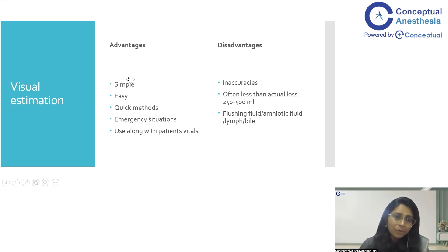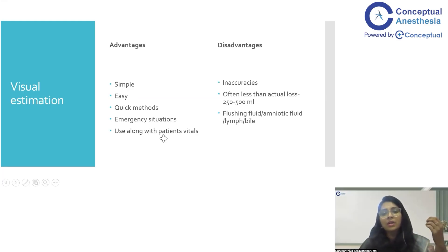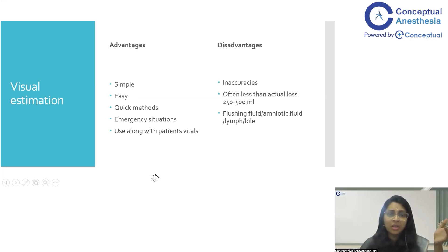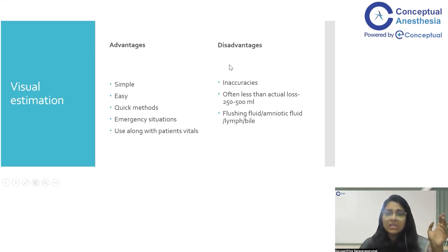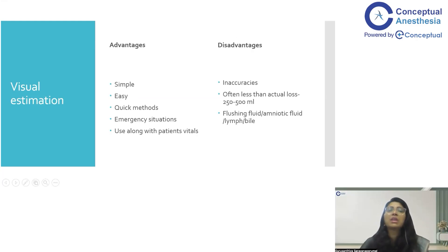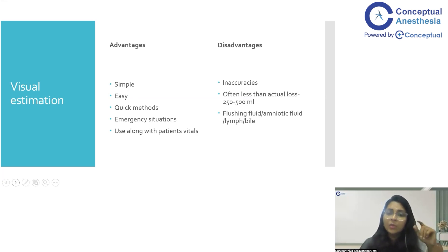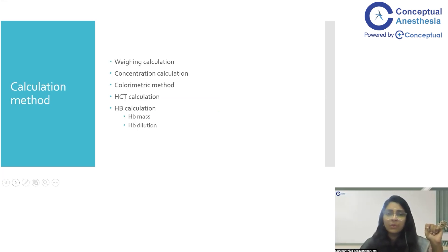In emergency situations, you have to titrate this estimate along with patient vitals — heart rate, blood pressure, anxiety level, and respiratory rate. If used in synchrony with patient vitals, this will give you an improved result. The disadvantage is inaccuracy, with a 250 ml to 500 ml margin of error compared with other methods. Flushing fluids, amniotic fluid, lymph, and bile in the suction apparatus circuit can give false positive results.